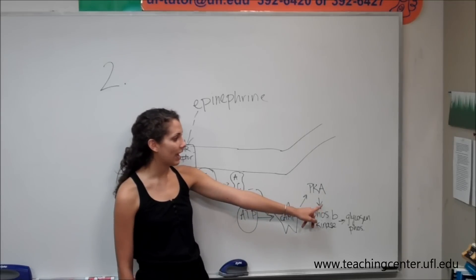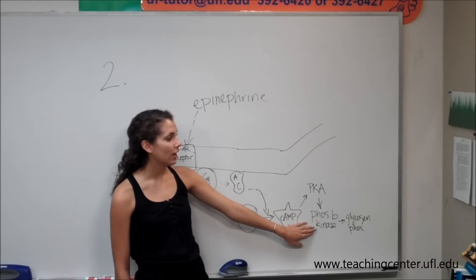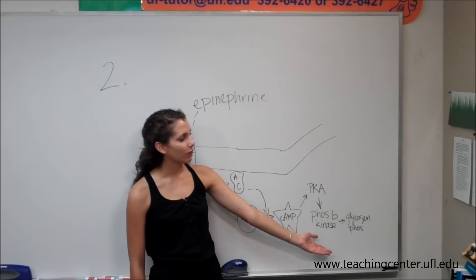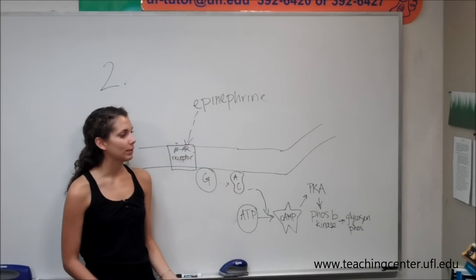The cyclic AMP is the second messenger. It activates PKA. And then PKA activates phosphorylase kinase, which activates glycogen phosphorylase. And then after many steps, basically glycogen is broken down and glucose is released into the blood.